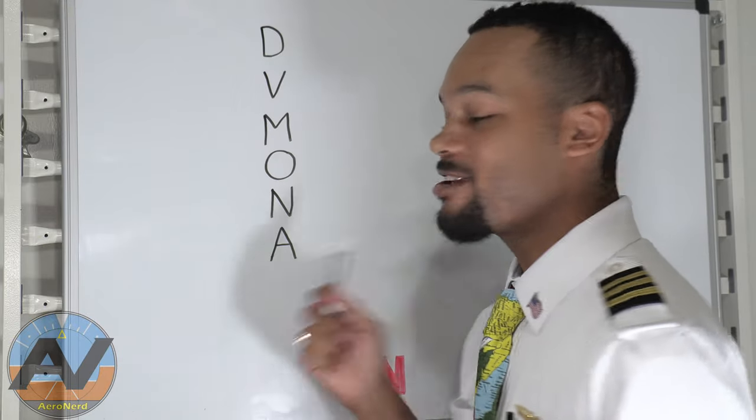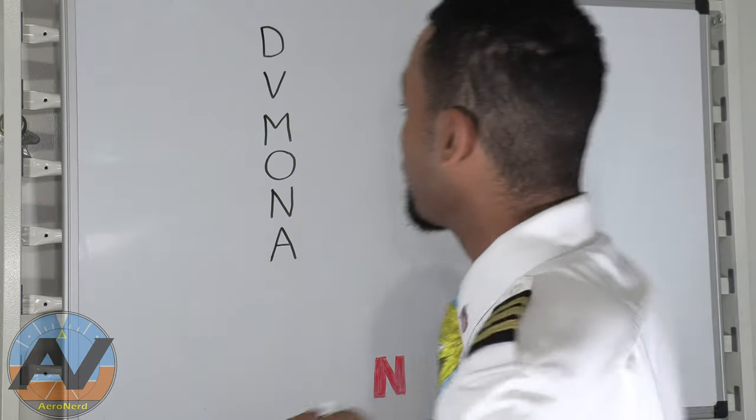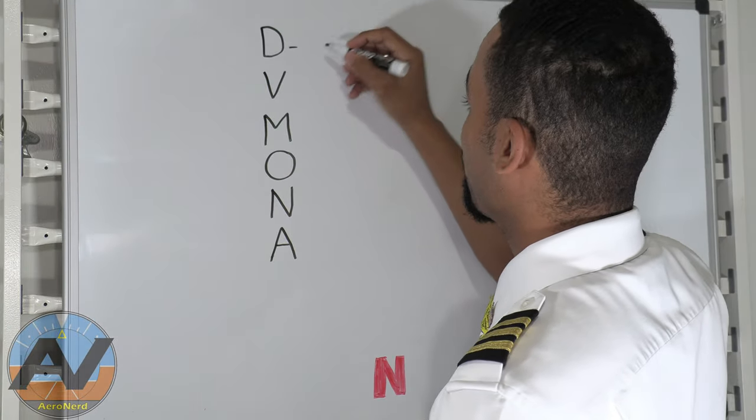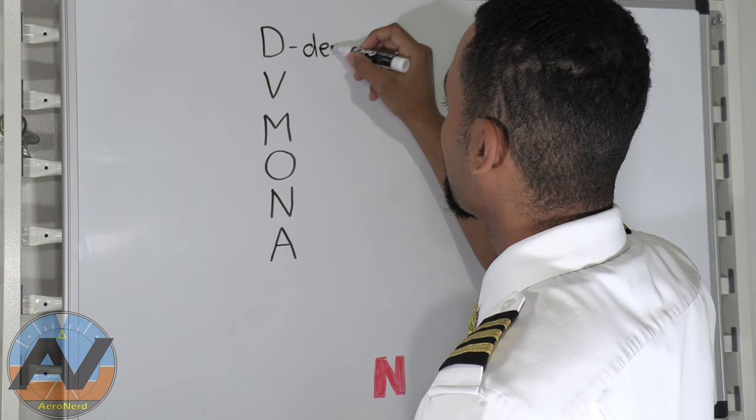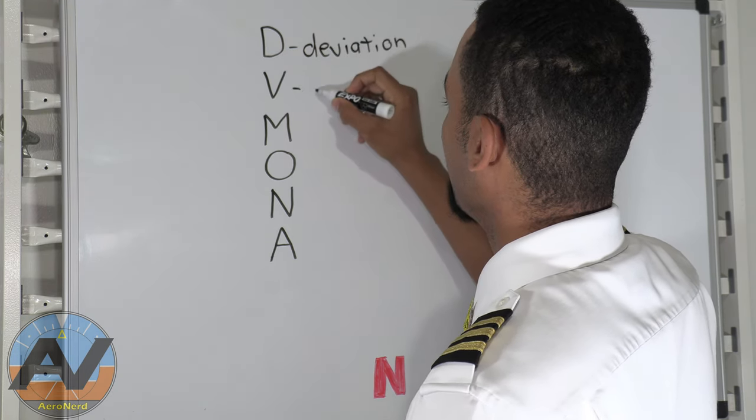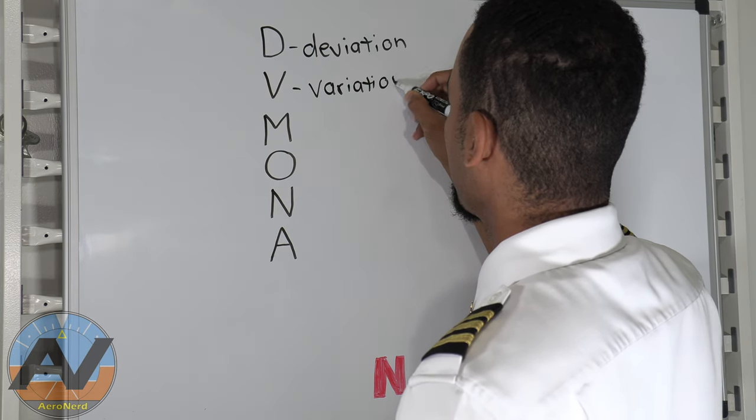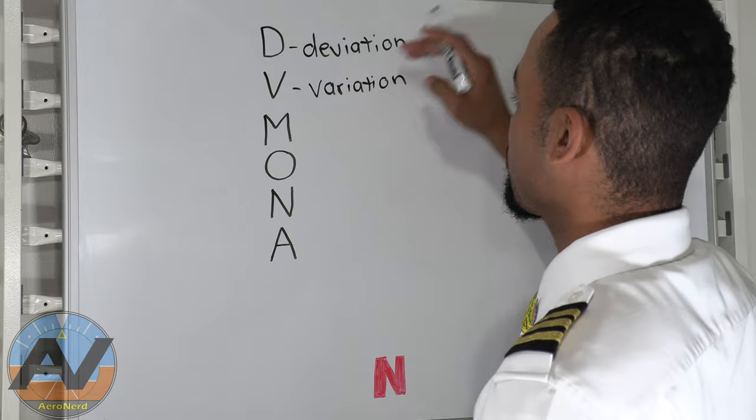Hey instrument pilots, welcome to session number 12. We're going to be talking about the Compass Errors. Now you may recognize this acronym right here, DVMONA. There are many other acronyms, but this is the one I use, so this is the one we're going to use today. So D is for deviation, V variation, and I'll just start there before I go to the next one.